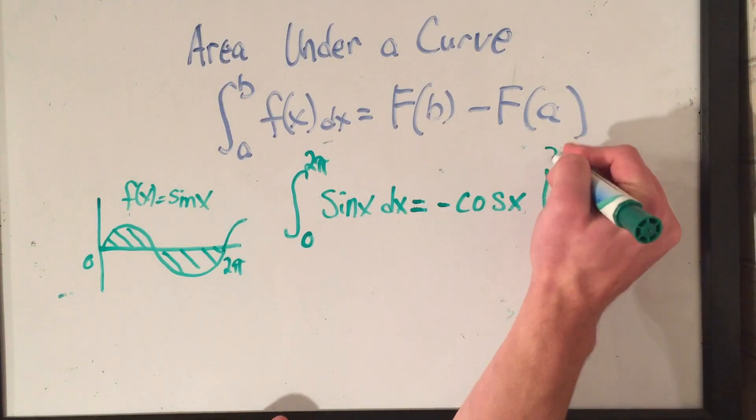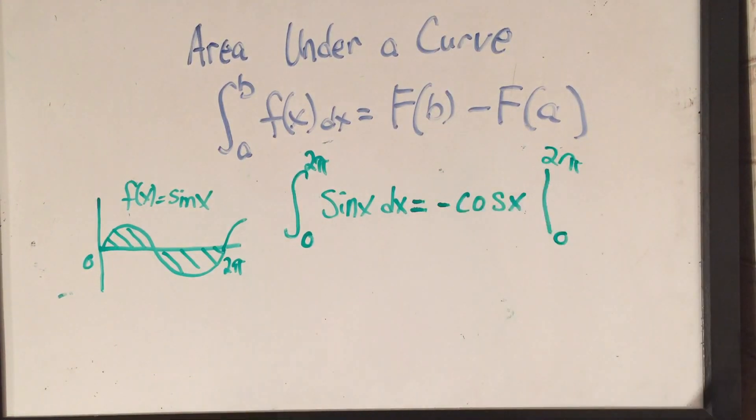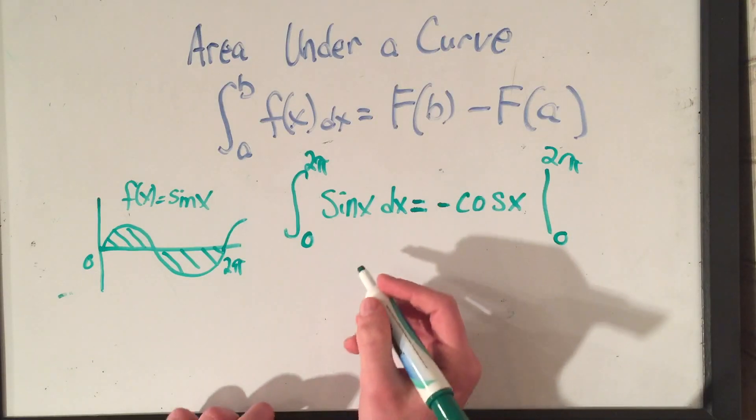And then I write this, we call it an evaluation bar, the curvy s turns into a bar, and I plug 2 pi into our function, minus, I plug in 0.